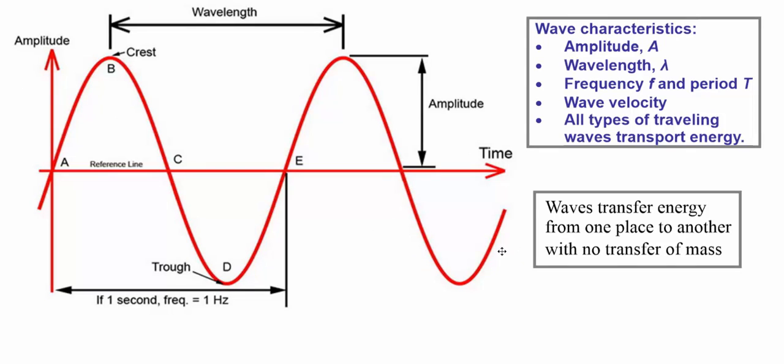We've got multiple characteristics of waves that you absolutely need to be comfortable with, and I'm going to take the time in this lesson to go through every one of them in detail. Some of the characteristics I'll be discussing are wave amplitude, wavelength, frequency and period, your wave velocity. All types of traveling waves transport energy. But, more importantly, it's the transfer of energy and not the transfer of mass. While mass might appear to be moving, it's really energy that's traveling through the material.